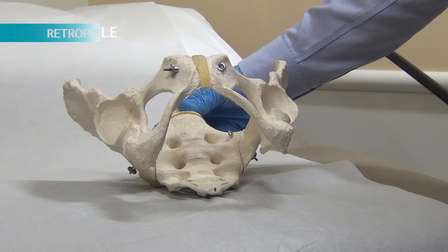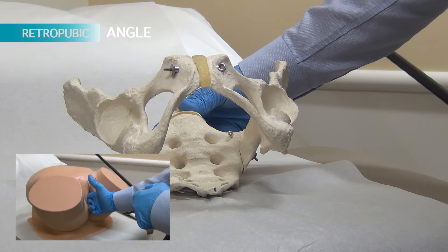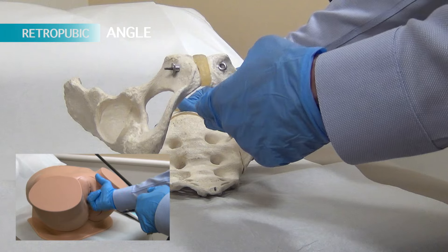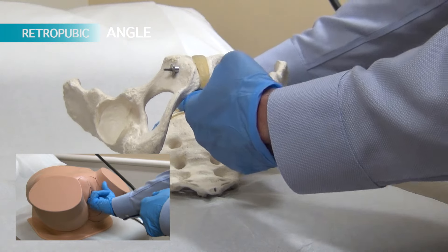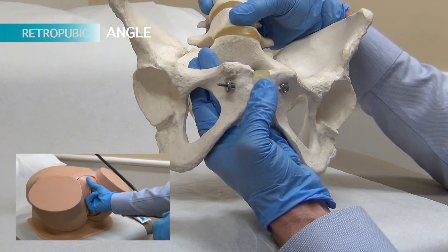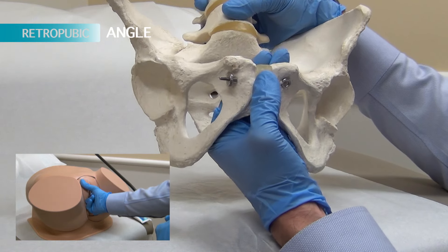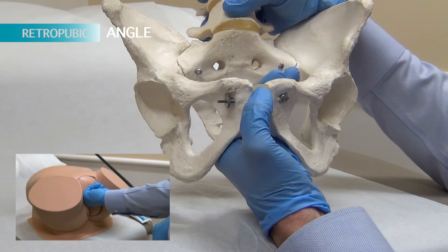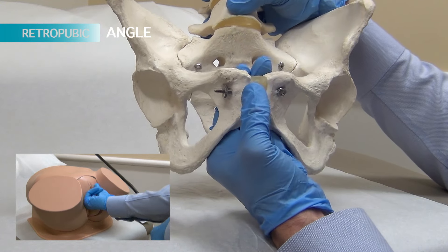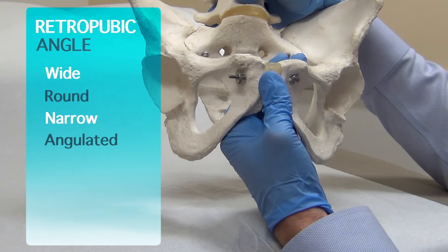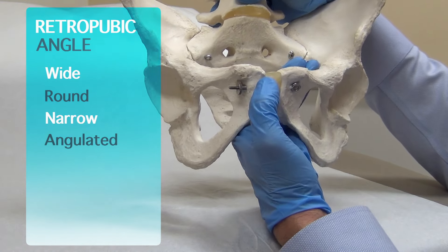The retropubic angle should not be confused with the pubic arch. In examining the retropubic angle, the examiner reaches the two examining fingers up behind the pubic bone and palpates the posterior aspect of the pubic bone and the superior pubic rami. This will allow assessment of the anterior portion of the pelvic inlet. The retropubic angle is described as wide, round, narrow, or angulated.